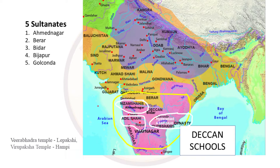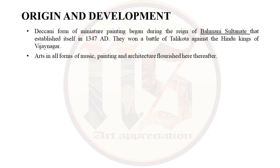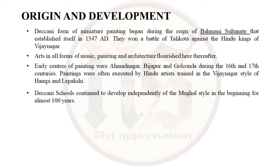Now let's look at the origin and development. The Deccani form of miniature painting began during the reign of Bahmani Sultanate, established in around 1347. They won the Battle of Talikota against the Hindu kings of Vijayanagar, after which art in all forms — music, painting and architecture — flourished. Early centres of painting were Ahmednagar, Bijapur and Golkonda during the 16th and 17th centuries.